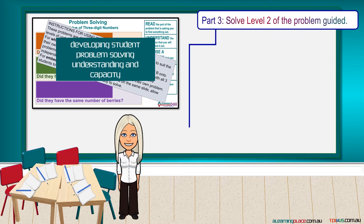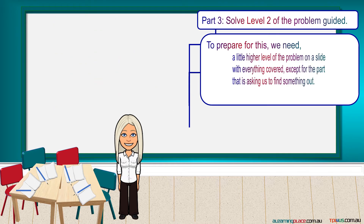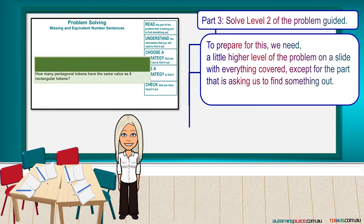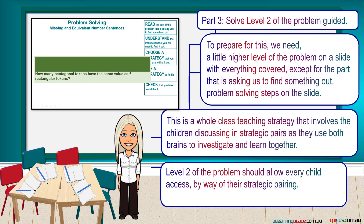Part 3: Solve level 2 of the problem guided. To prepare for this, we need a little higher level of the problem on a slide with everything covered, except for the part that is asking us to find something out. Problem-solving steps on the slide. This is a whole class teaching strategy that involves the children discussing in strategic pairs, as they use both brains to investigate and learn together. Level 2 of the problem should allow every child access, by way of their strategic pairing.